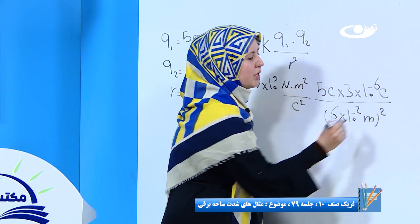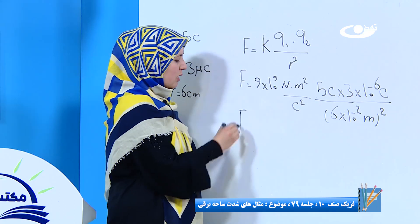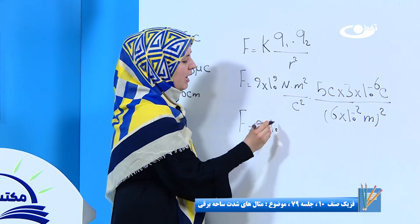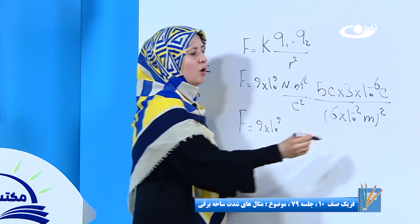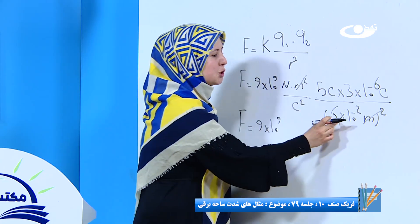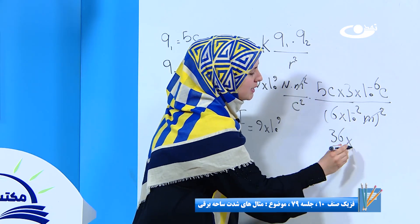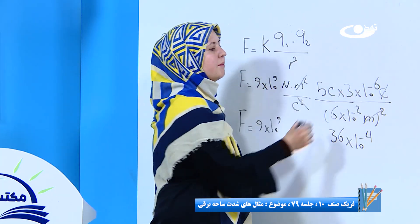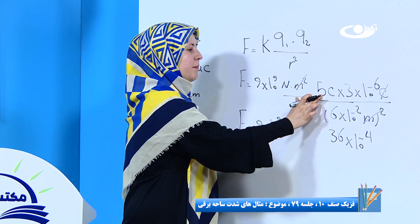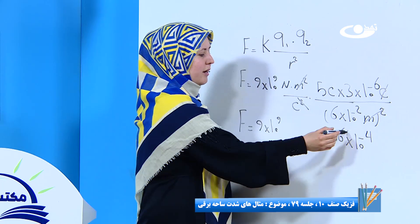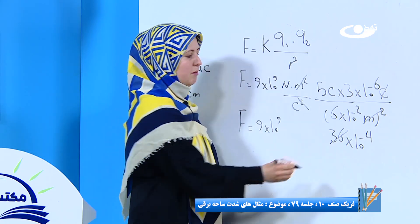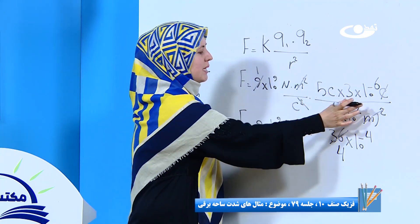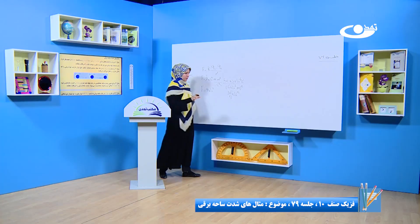توان کلی چی می‌شه؟ مربع می‌شه. حالی رابطه را با همدیگه ساده می‌کنیم. ۹ ضرب ۱۰ به توان ۹، متر مربع بالا با متر مربع پایین خلاص می‌شه. ۶ که مربع بشن می‌شه ۳۶ ضرب ۱۰ به توان منفی ۴. یک کولمب و یک کولمب خلاص می‌شه. ۹ ضرب ۵ ضرب ۳، ۳۶ تقسیم ۹ می‌شه ۴، ۹ تقسیم ۹ می‌شه ۱، ۵ ضرب ۳ می‌شه ۱۵.